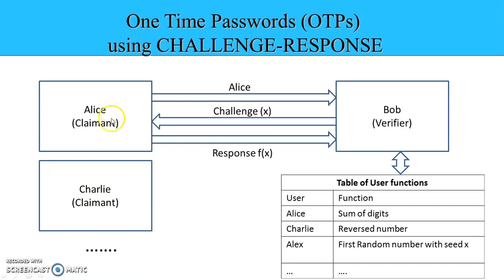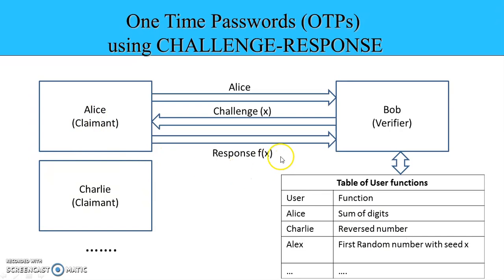The communication between users and server Bob can be implemented in the form of a socket program. Every user will first give his or her identity to this server. The server will throw a challenge in the form of a number X, and that user, depending on the pre-defined function, has to respond correctly. If a user responds correctly, they will be authenticated. If the response is incorrect, the user authentication will fail.